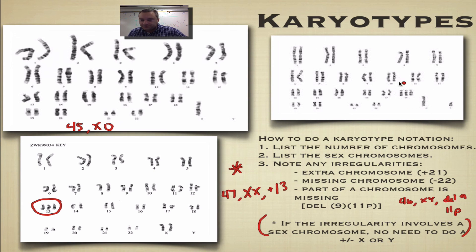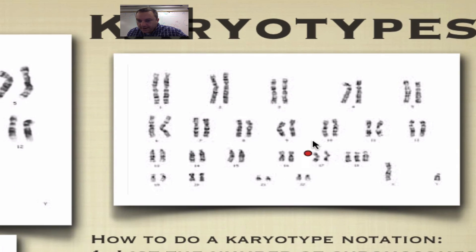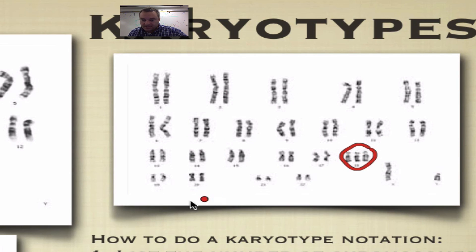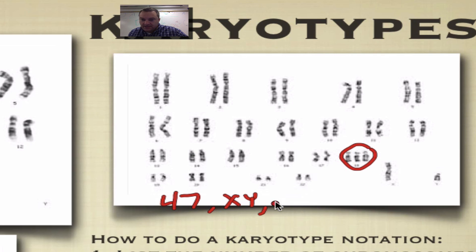Looking at another example: counting through the pairs — there are three of something at one position, and there's an X and a Y. So this one would be 47 XY +18. That's how you would notate that.